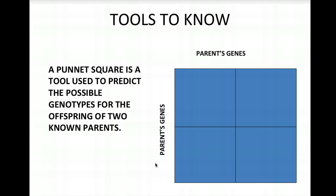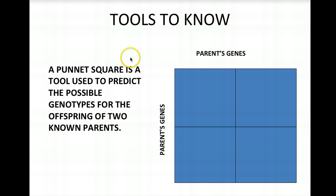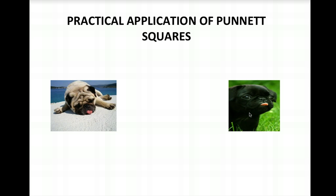Now, the key tool we need is the Punnett square. A Punnett square is used to predict possible genotypes and phenotypes of offspring from two known parents. You can also work backwards — given the offspring and one parent, figure out the other parent's genotype. It looks like a box divided into four sections. The parents' genotypes go on the outside — one parent across the top and one down the side.